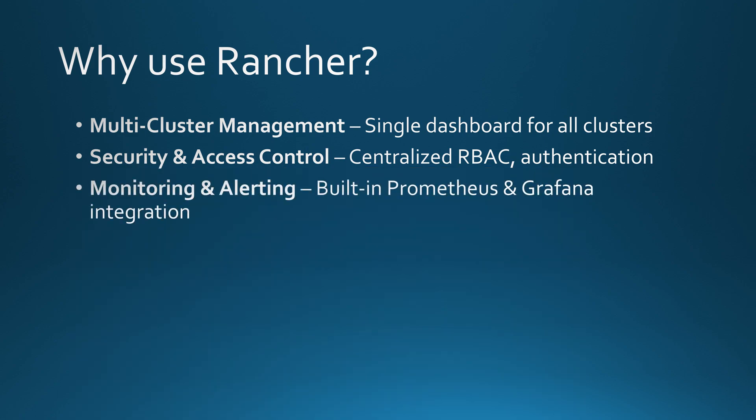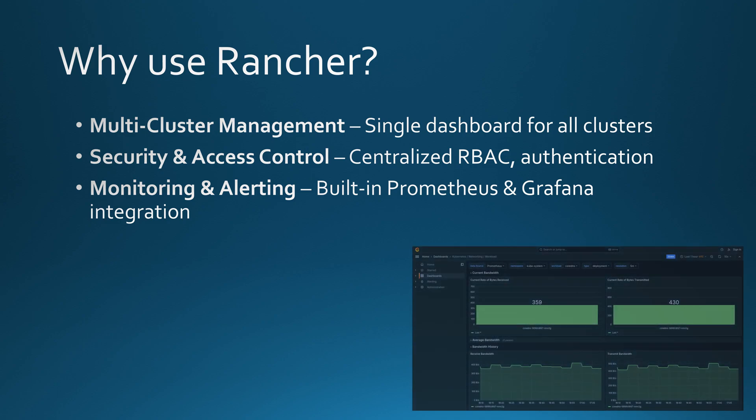Running Kubernetes at scale means keeping an eye on performance, logs, and potential failures. Rancher makes this easy by integrating monitoring and alerting out of the box with Prometheus and Grafana. This means you get real-time insights into how your clusters are performing, so you can spot issues before they become critical.